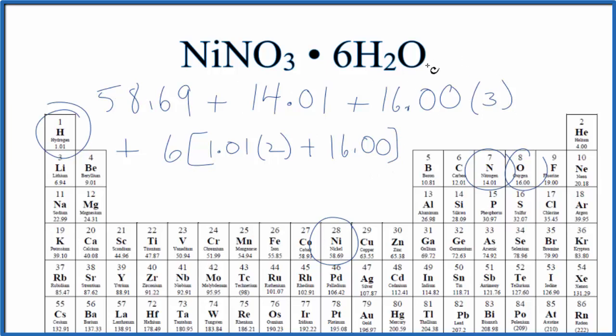So we add these up. We do our multiplication, and then we add the six water molecules. We end up with a molar mass for NiNO3·6H2O is 228.82, and the units are grams per mole.